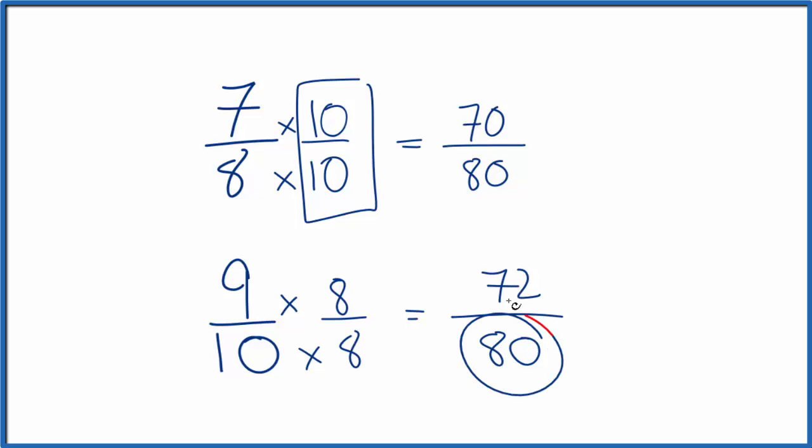So now I can compare these. They have the same denominator and I'm going to compare the numerators. 72 is larger than 70. So 9/10 is larger than 7/8.